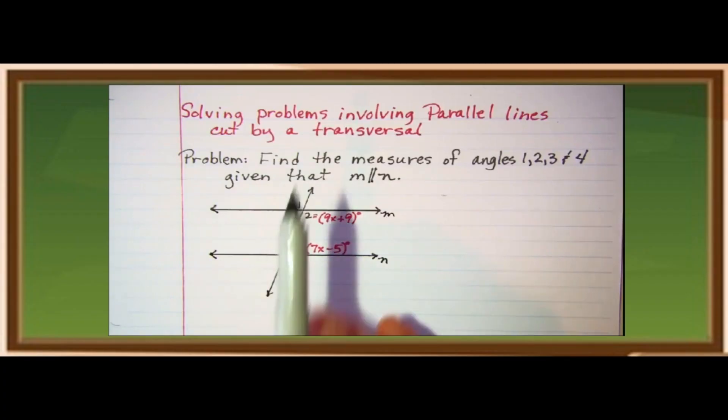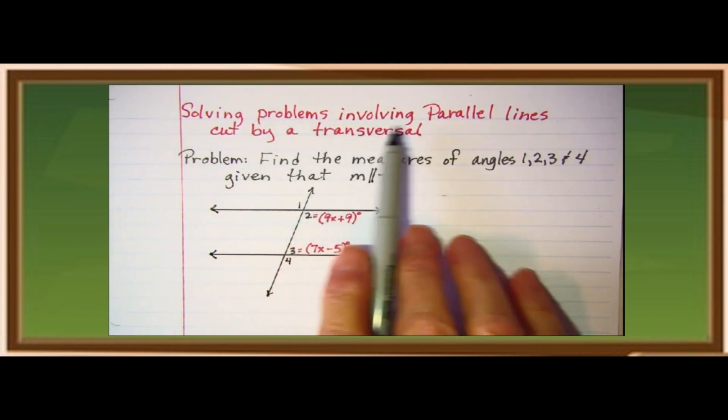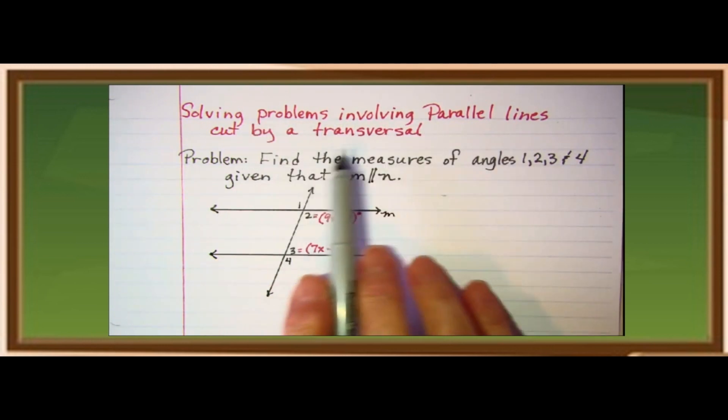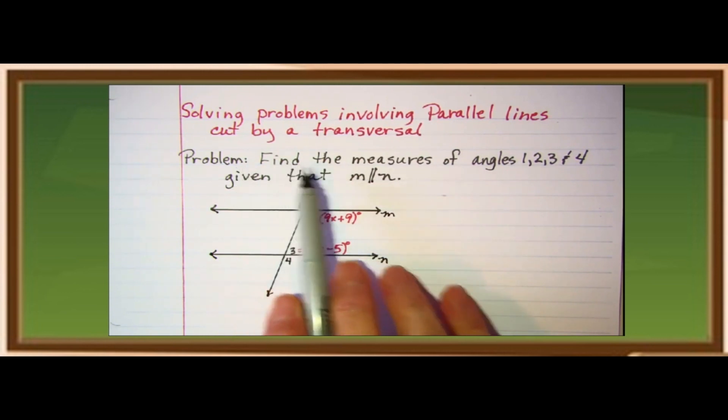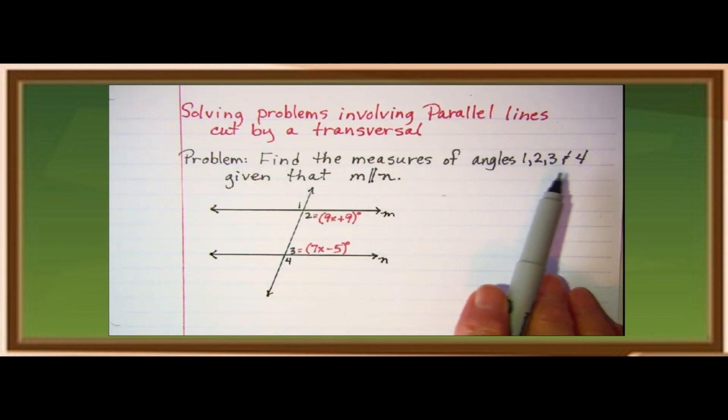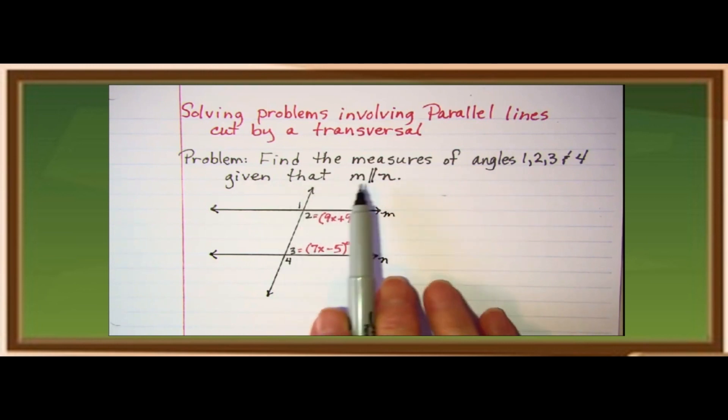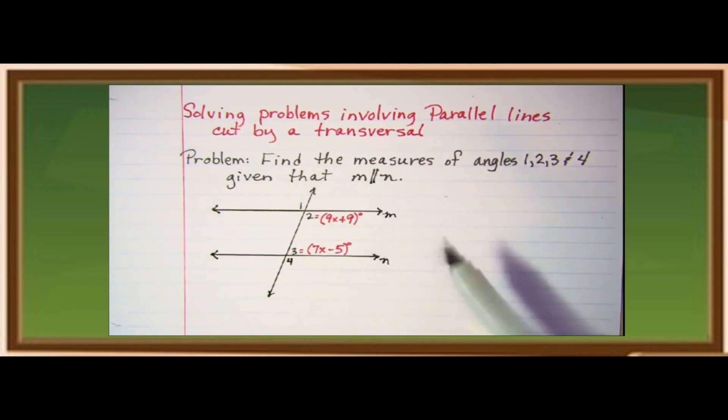In solving problems involving parallel lines cut by a transversal, the problem here is to find the measures of angles 1, 2, 3, and 4 given that line M is parallel to line N. So, we have these two lines cut by this transversal.